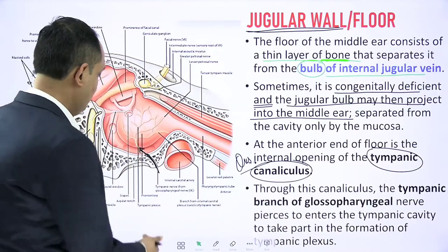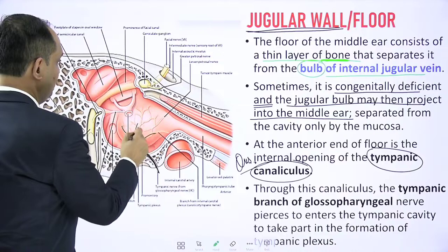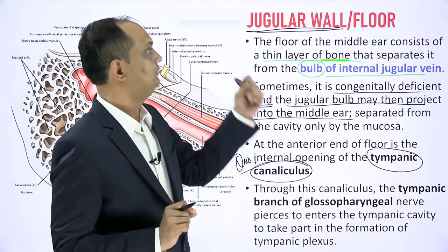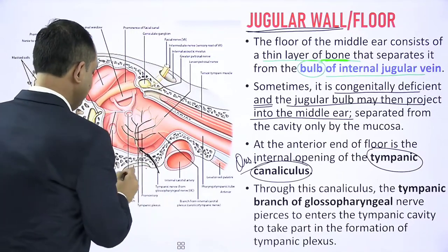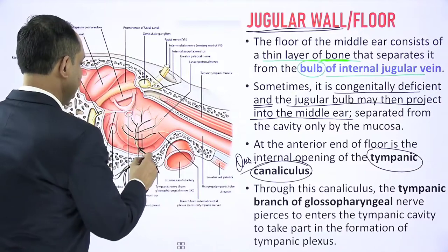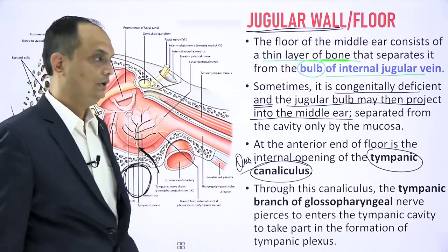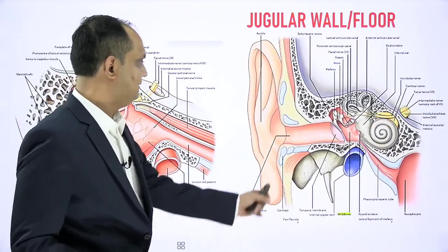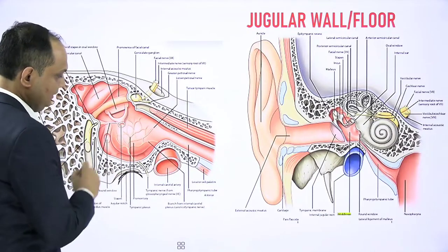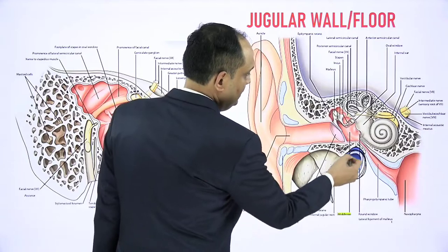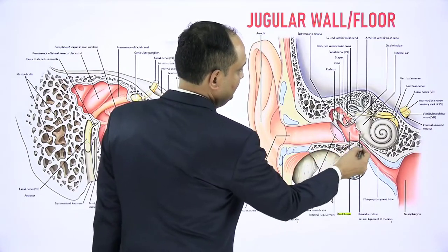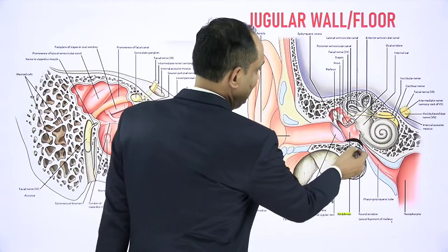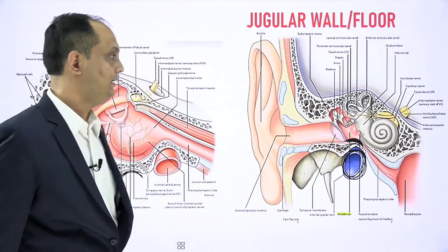The tympanic branch of the glossopharyngeal nerve pierces the floor, enters the middle ear, and forms a plexus on the promontory called the tympanic plexus. Two important features of the floor: first, its relation with the bulb of the internal jugular vein; second, there is a small aperture for entry of the tympanic branch of the glossopharyngeal nerve called the tympanic canaliculus. If the bone is absent, only mucosa partitions the vein from the middle ear cavity.